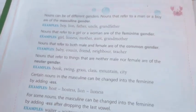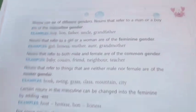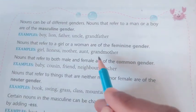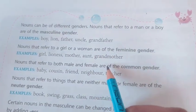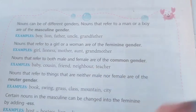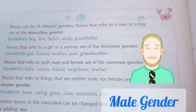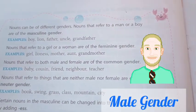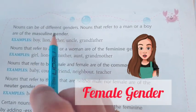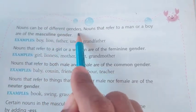Good morning children. Now open your grammar textbooks, page number 22. Today we will learn about genders. So what are genders? We know two genders, that is female and male gender. Nouns can be of different genders.